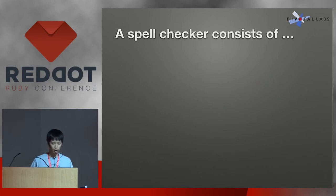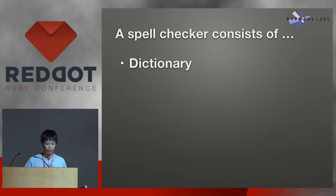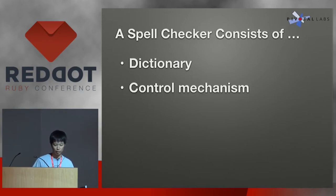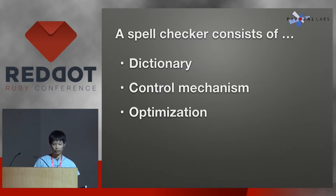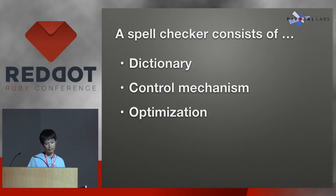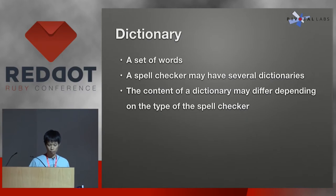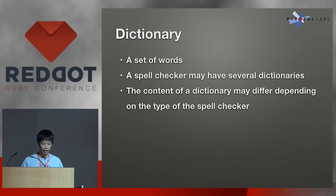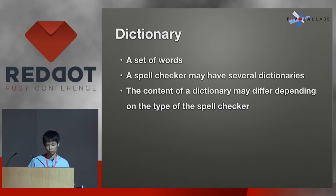Usually a spell checker consists of three things. The first one is a dictionary, which is basically just a set of words. The second one is a control mechanism, which decides what to return as a correction. And the last one is optimization. Technically, a spell checker can work with only a dictionary and a control mechanism, but usually some optimization techniques are applied to improve performance and accuracy.